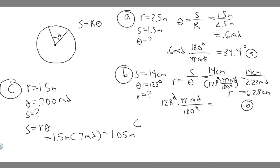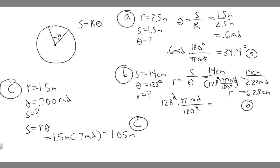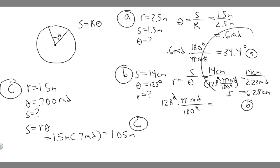So to summarize: Part C gives arc length 1.05 meters, Part B gives radius 6.28 centimeters, and Part A gives the angle as 0.6 radians and 34.4 degrees. Hopefully you found this useful.